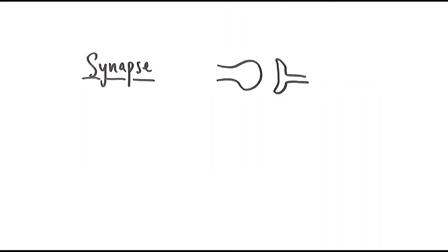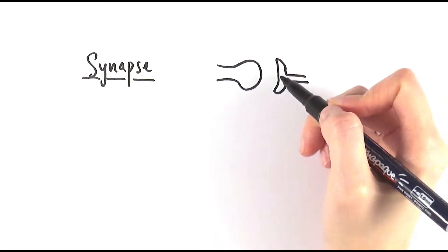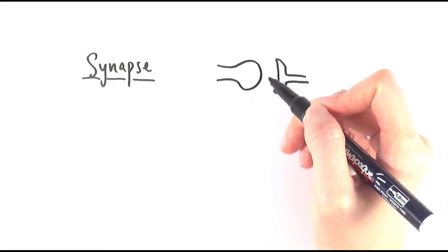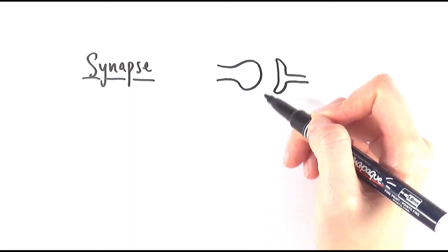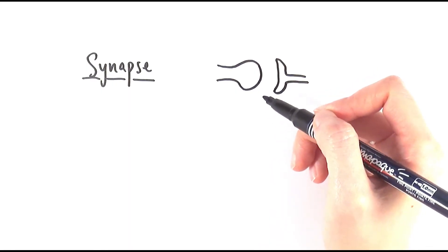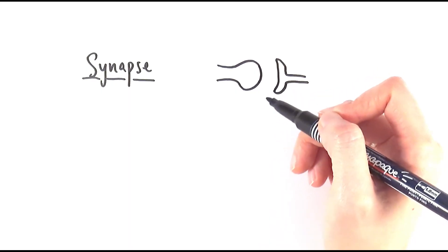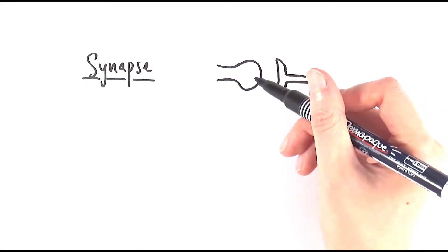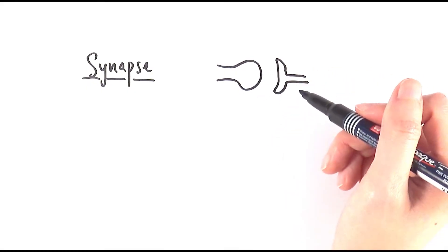In this video we'll be looking at synapses and specifically how a cholinergic synapse actually works. The synapse refers to the junction between two neurons, and it is able to transmit impulses by neurotransmitters from one neuron to the other.